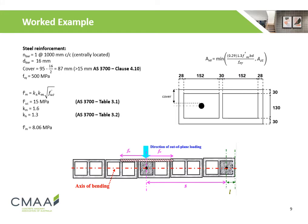The strength contributed by the steel reinforcement is calculated. The number of bars is 1, at 1 m centres, and the bar diameter is 16 mm. A cover of 87 mm is calculated for the steel bar, which is greater than 15 mm as per clause 4.10 of AS3700. The characteristic yield strength of the steel is 500 MPa. The characteristic compressive strength of the masonry is calculated to be 8.06 MPa, using values from tables 3.1 and 3.2.